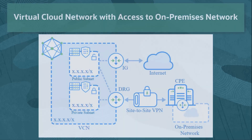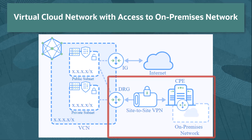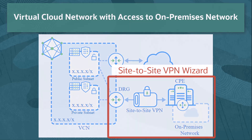But what if you need to add a site-to-site VPN connection from an existing virtual cloud network to an on-premises network? In this video, we will cover a quick start method via the Oracle Cloud Infrastructure web console called the site-to-site VPN wizard. It is the quickest way to set up a site-to-site VPN between your on-premises network and your virtual cloud network.